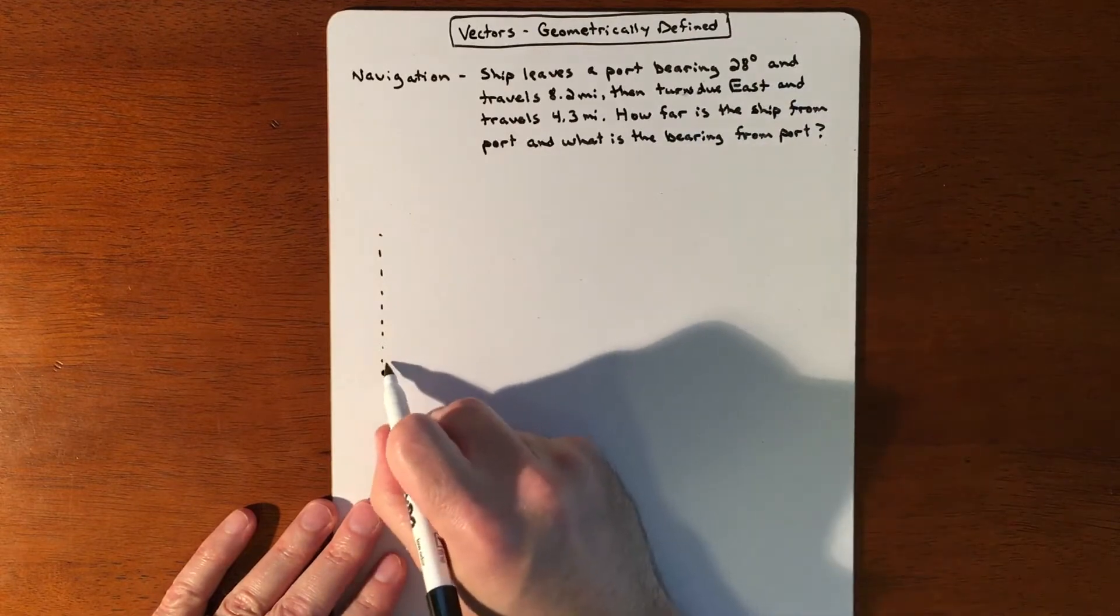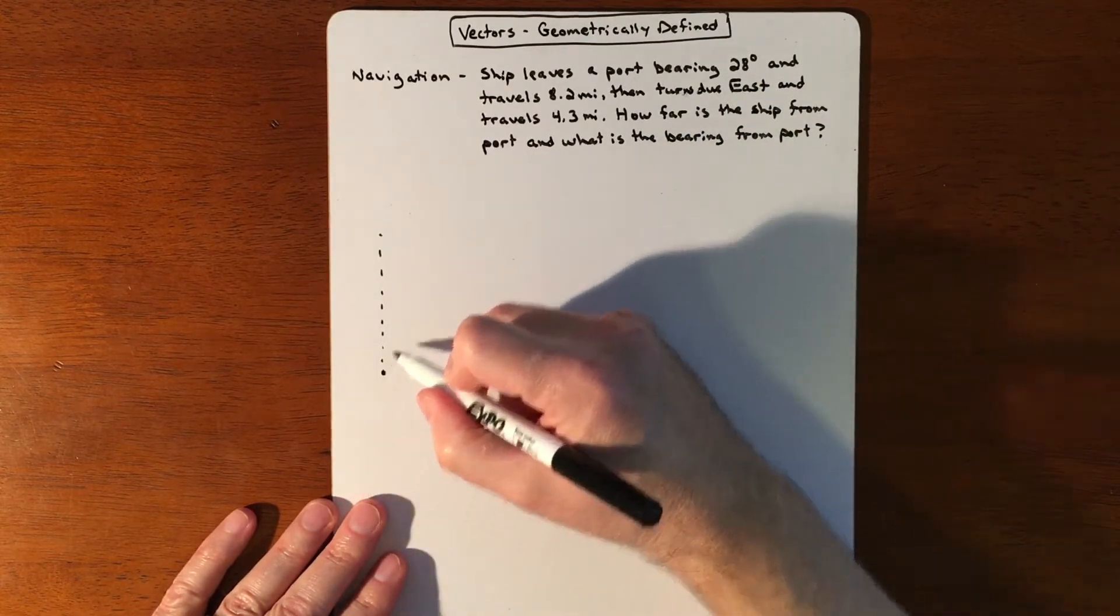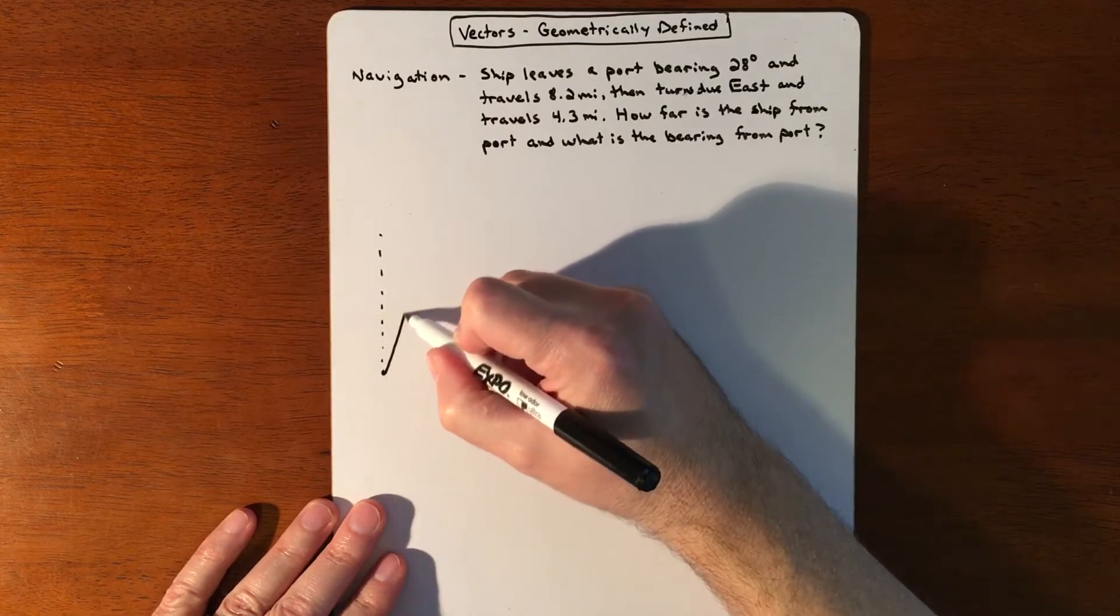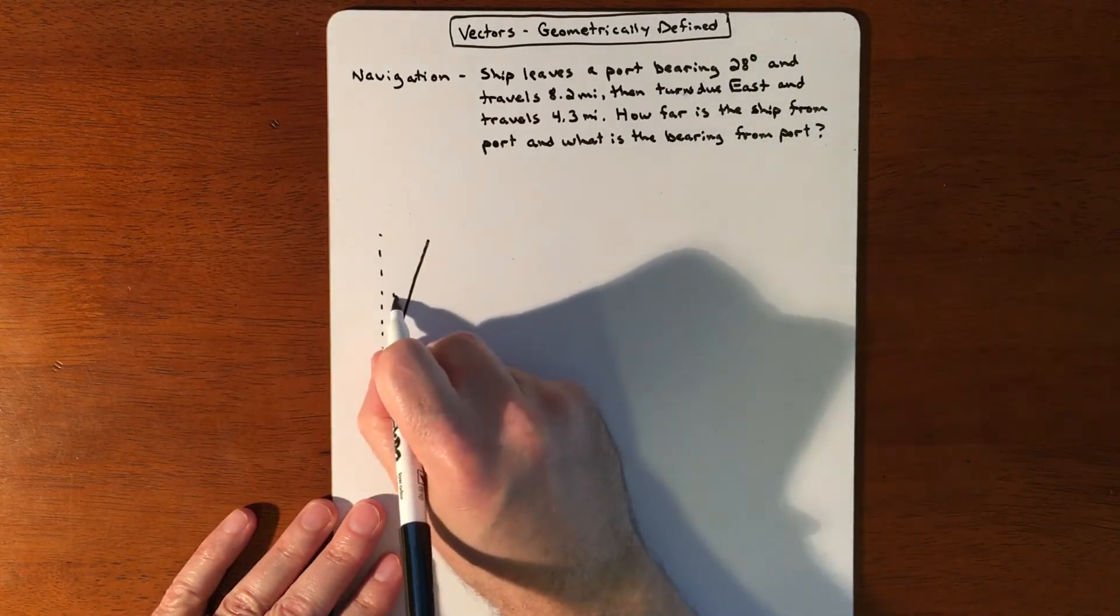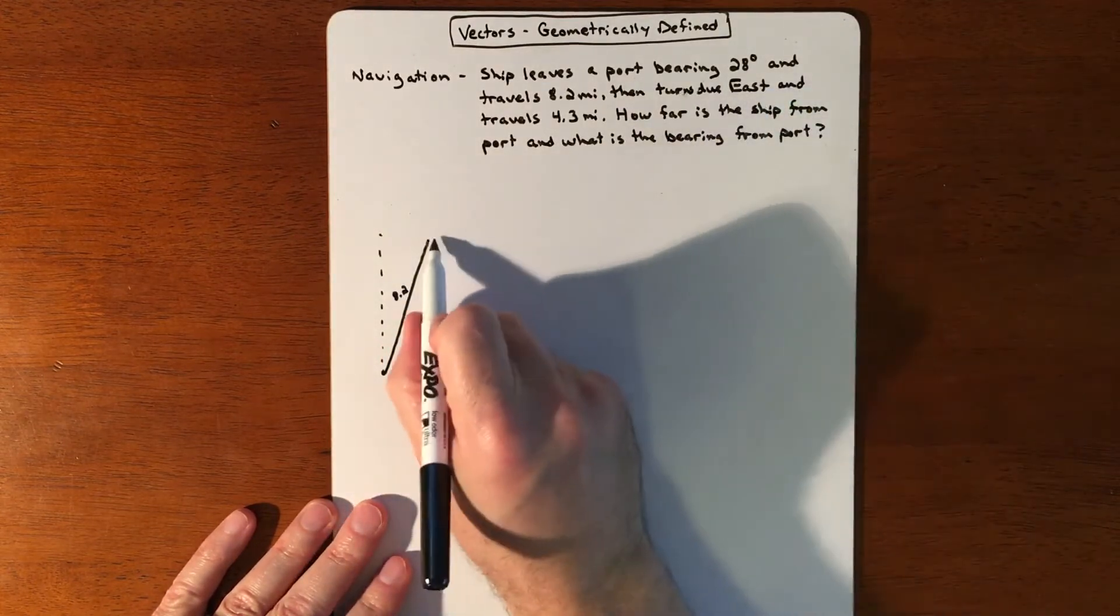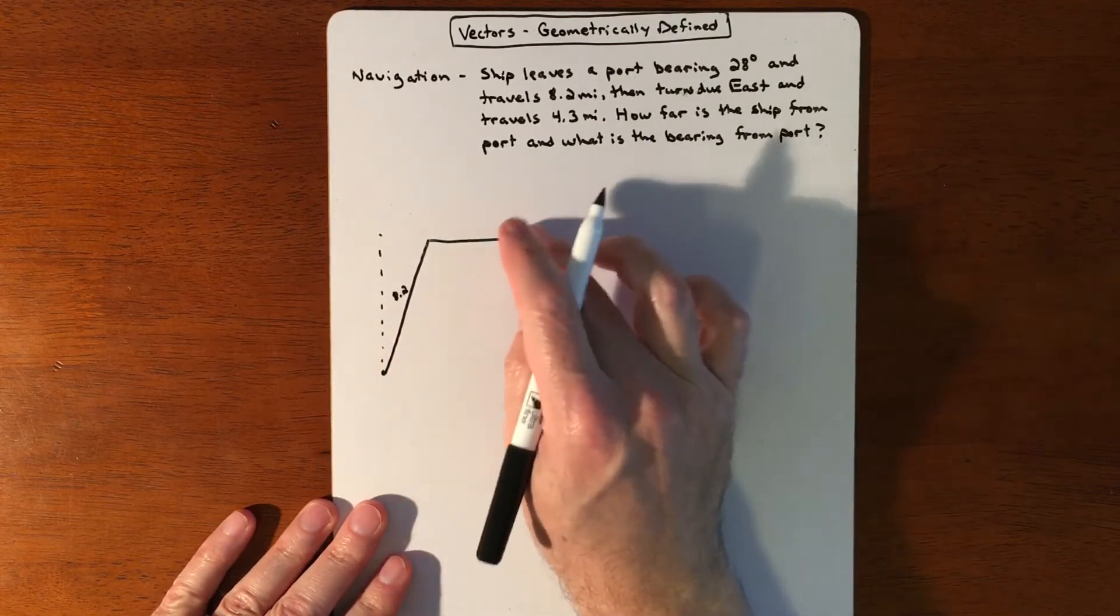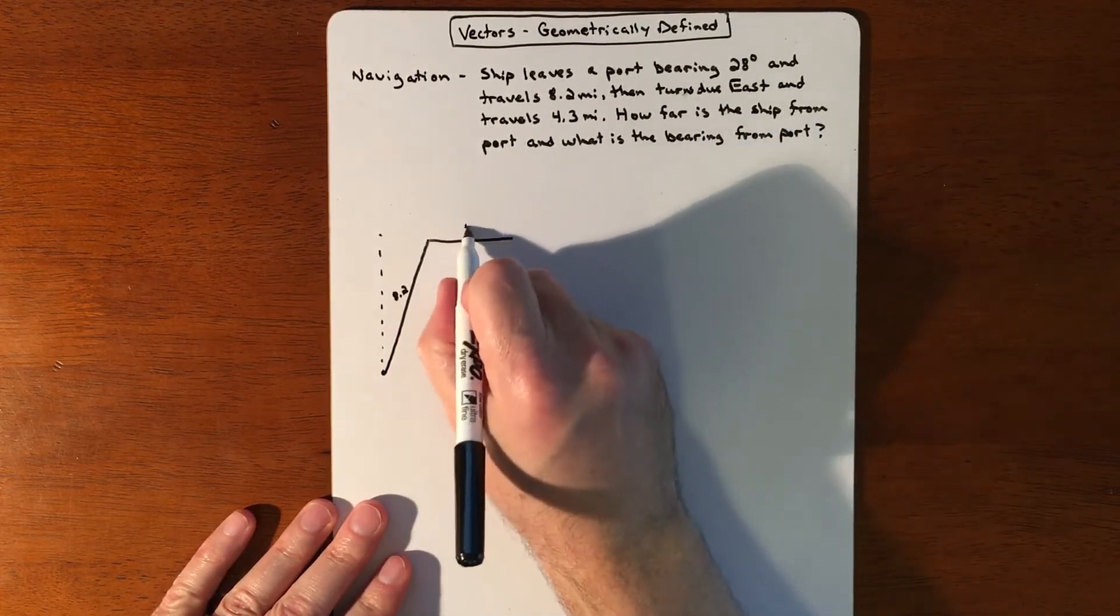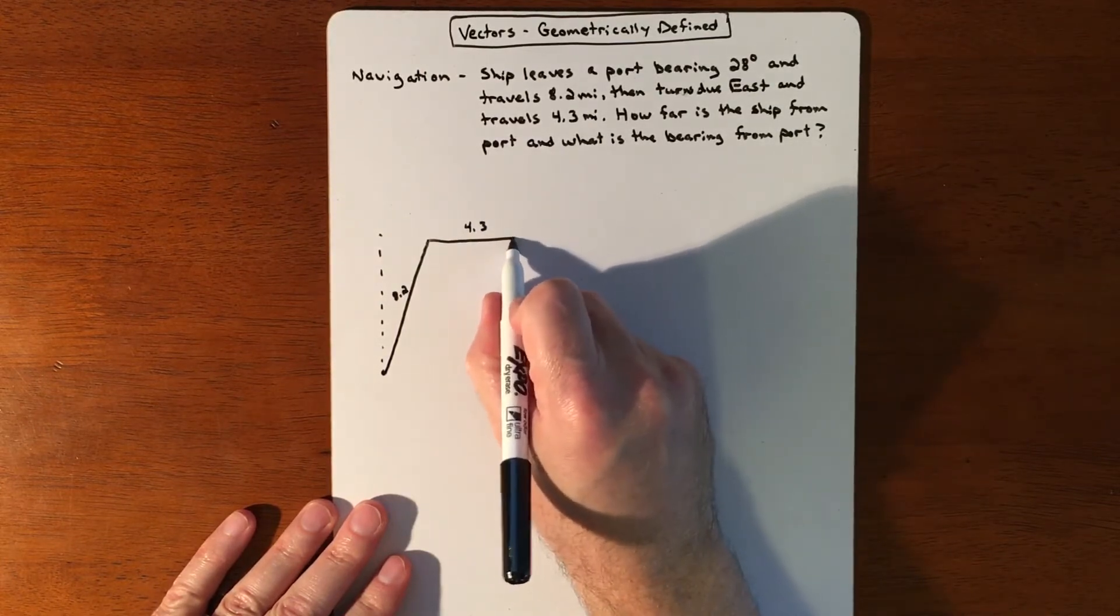So your ship is going to be going 28 degrees from due north, something like that, and it traveled 8.2 miles. And then it turns due east and then travels another 4.3. So let's say that's 4.3. And that's where the ship currently is.